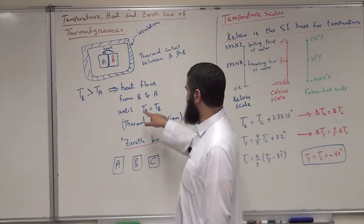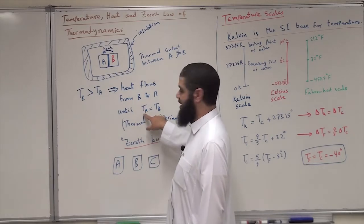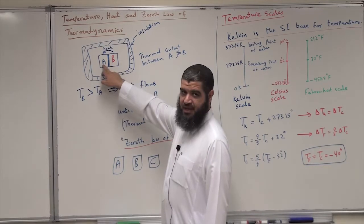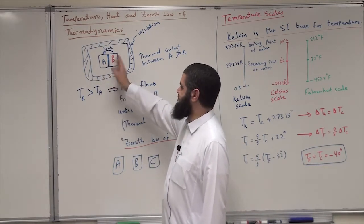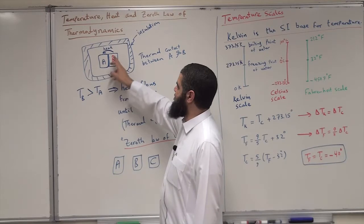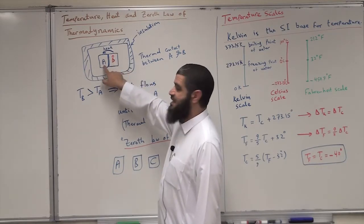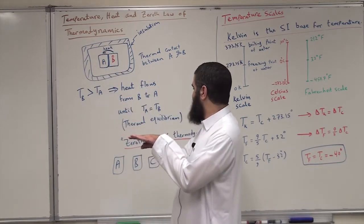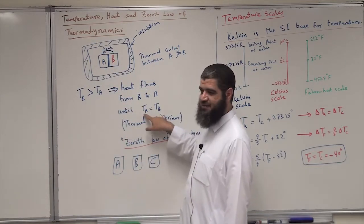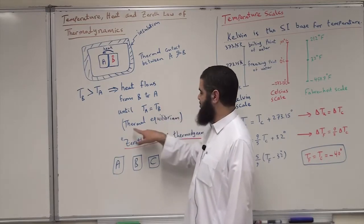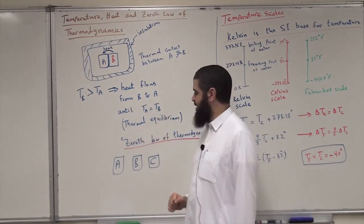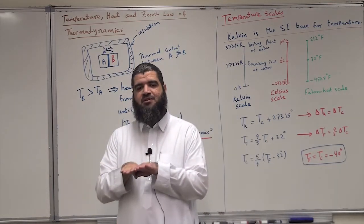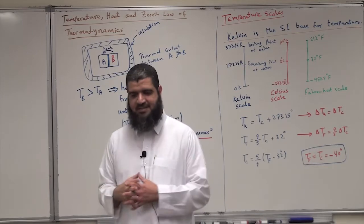Is there any end to this flow of heat? Yes — the process ends when both objects reach the same temperature. Heat flows from B to A. As B loses heat its temperature comes down, and as A gains heat its temperature rises, until T_A equals T_B. We then reach what we call thermal equilibrium, at which point the transfer of heat will stop.